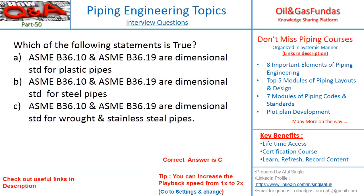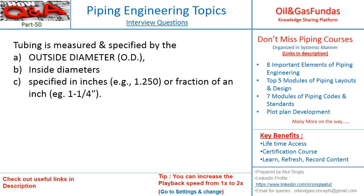The correct answer is D. These two standards provide dimensional details — for example, if you want to check pipe thickness, schedule number, all the dimensional standards including SI standards, weights, and dimensions for any pipe can be obtained from these two standards.